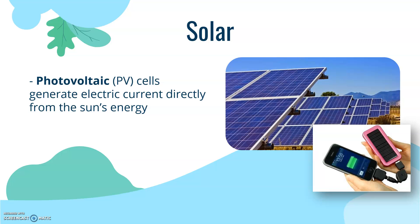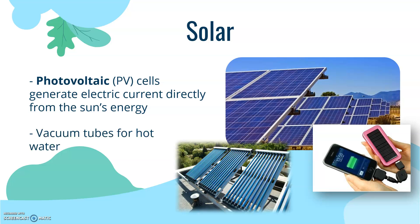Next up we have solar. Photovoltaic cells can generate electrical current directly from the sun's energy — 'photo' meaning light as in photograph, and 'voltaic' as in voltage. They come in portable, compact versions as well, not just large installations. If you see tubes on a roof, these are vacuum tubes with water running through them that heats up straight to the water tank.